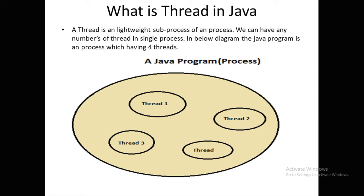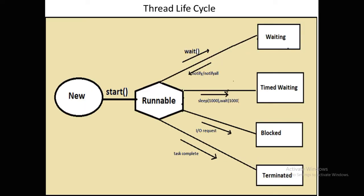Let's talk about the thread lifecycle. The thread lifecycle has these states: New, Runnable, Waiting, Timed Waiting, Blocked, and Terminated. Let's talk about each state.